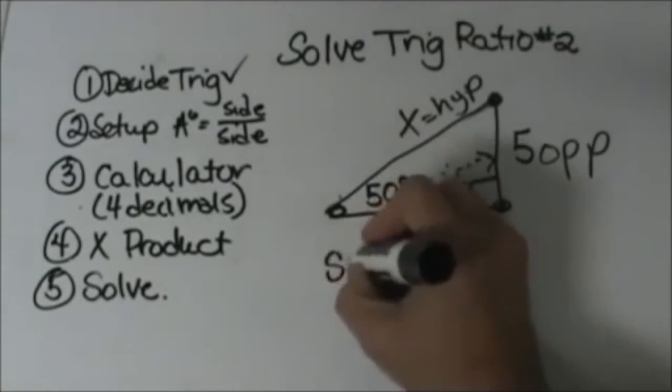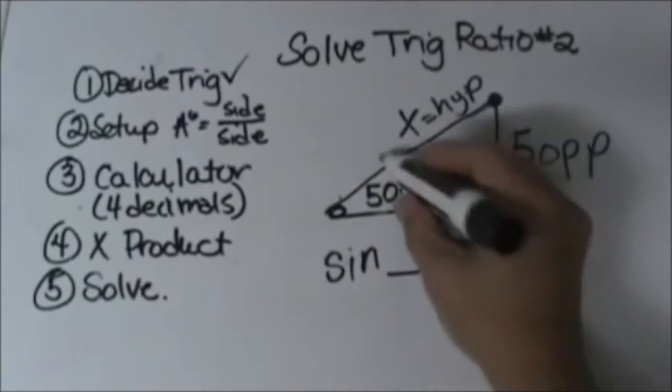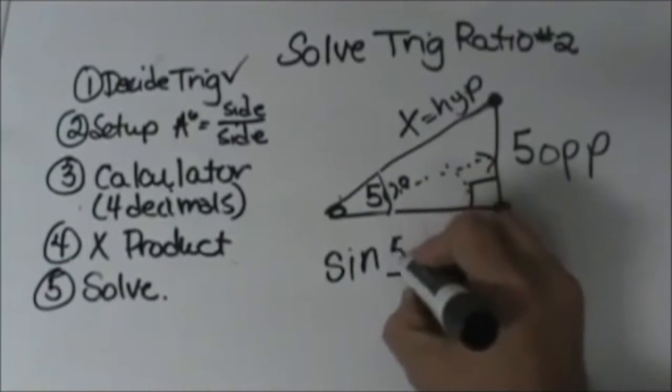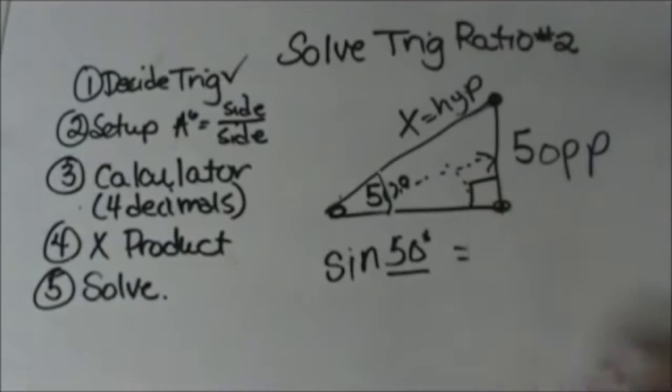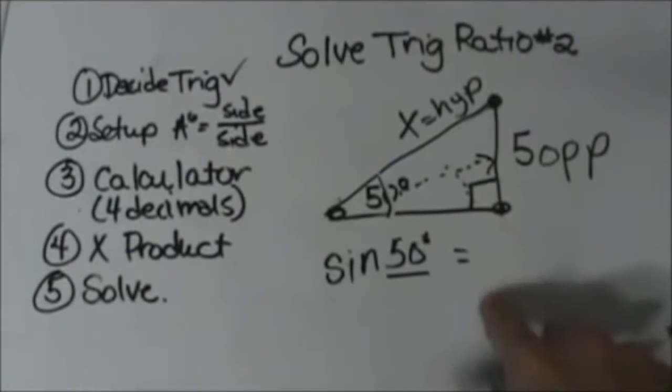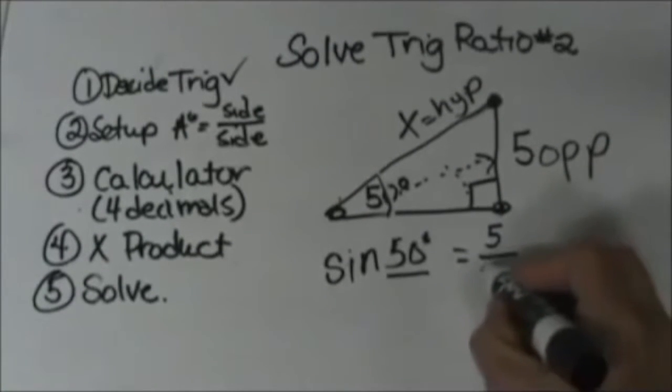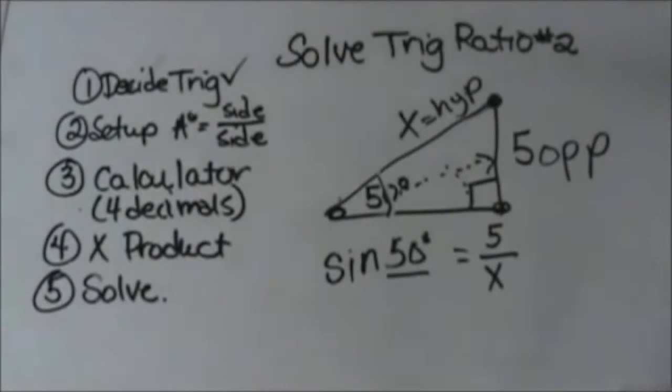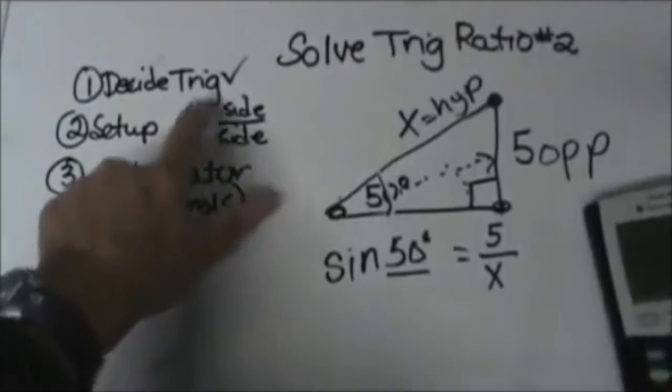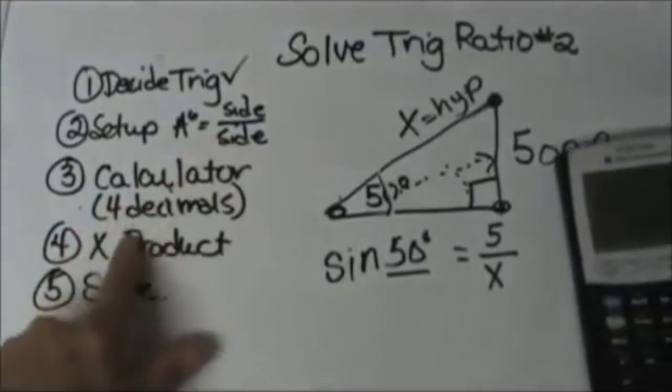So I'm going to set it up as the sine of what angle? Well, our reference angle is 50 degrees. So that's what I fill in for my angle. Now I'm going to set up the ratio of the two sides. So my opposite side is 5, my hypotenuse is unknown so it's x. Now we need to grab, so we've set up our angle with the ratio of the sides. So we've done step 2.